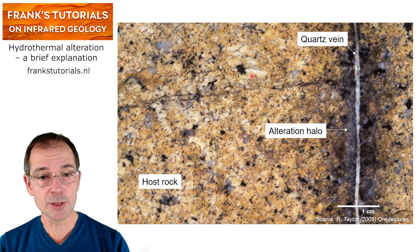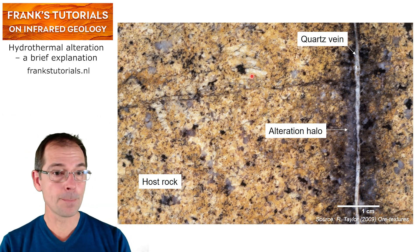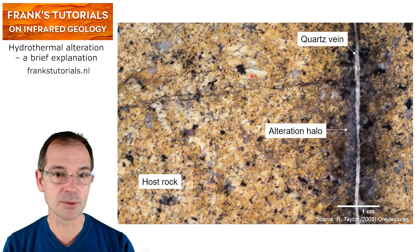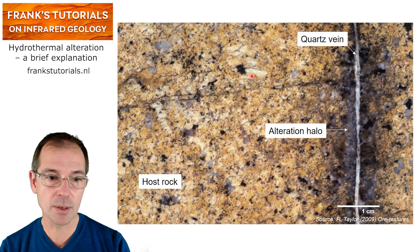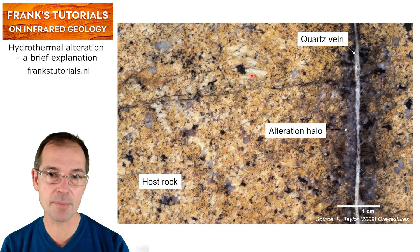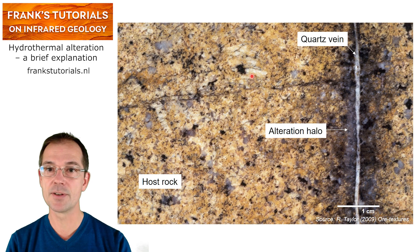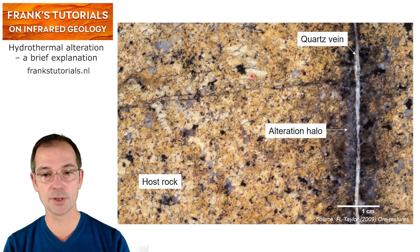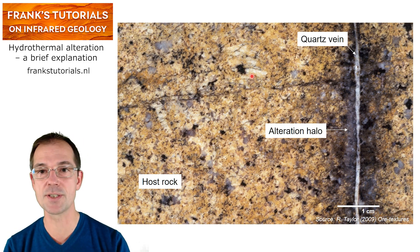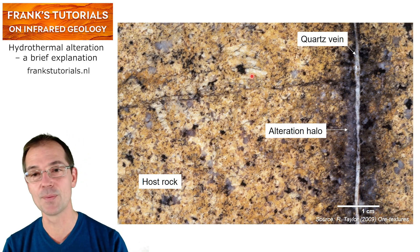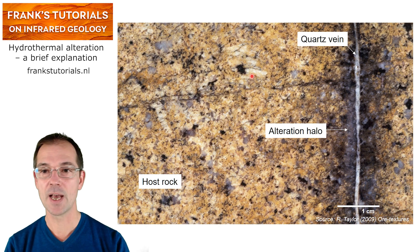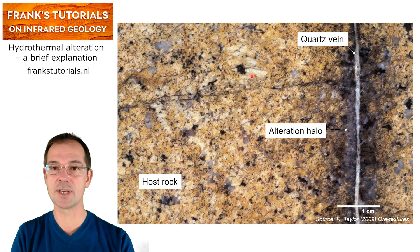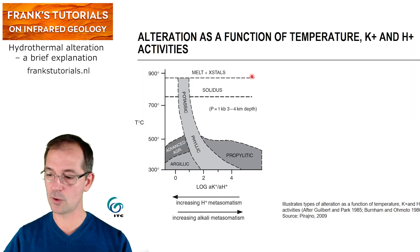So this was everything I wanted to say about this rock. Remember that we need three components: a host rock, an alteration halo, and a channel way represented here by a quartz vein.